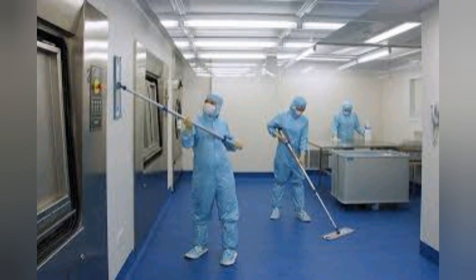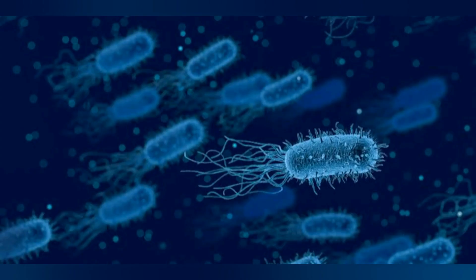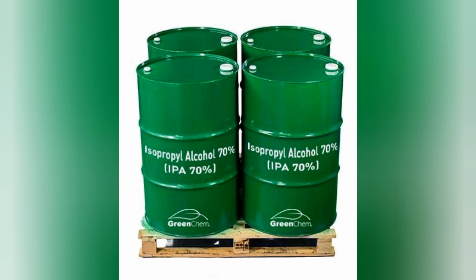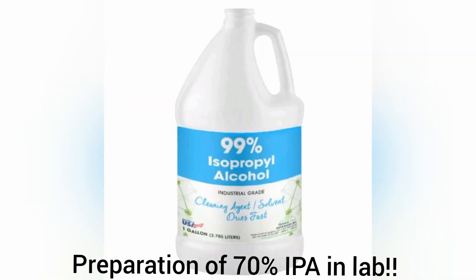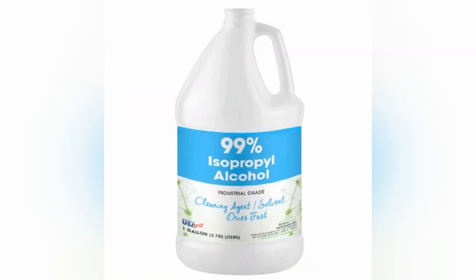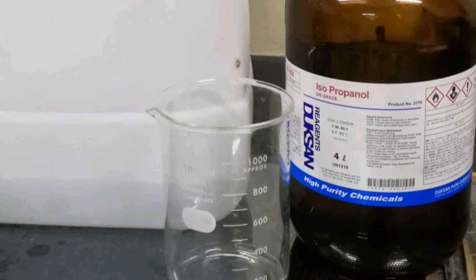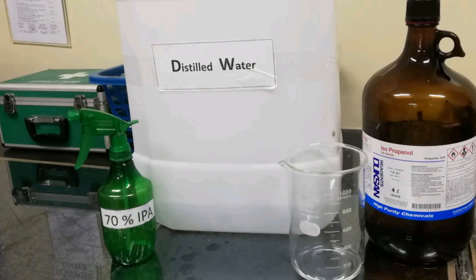The extra water content in 70% IPA solutions allows it to penetrate the cell wall more completely, coagulating all proteins within the cell, and therefore the microorganism dies. It also increases surface contact time, which really matters. IPA is commercially available at 70%, but since it's not very common, we prepare it from 99% in our lab.